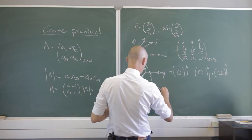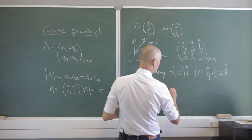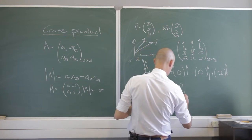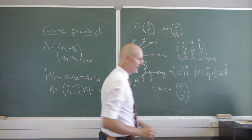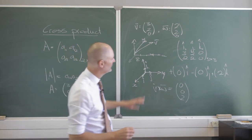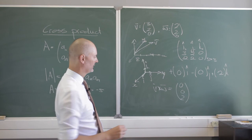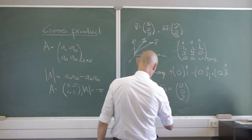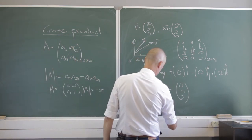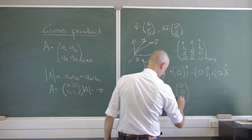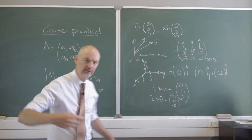So v cross w is going to equal zero zero two. There we go in that order and if I were to swap those two around I'm not going to get the same solution. If it's w cross v it's going to be zero zero minus two, just going to be into the board.